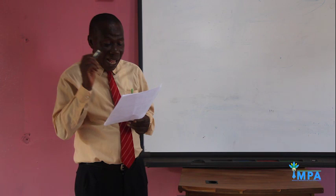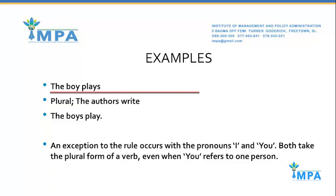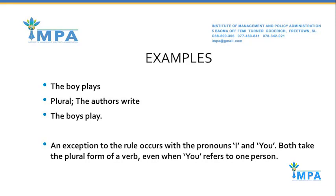With most regular verbs, singular verbs add S. For example, 'the author writes' — author is a singular subject, writes is a singular verb. 'The boy plays' — boy is a singular subject, plays is a singular verb. In other words, the plural for author should be 'authors' and the verb should be 'write.' The plural for boy should be 'boys' and the verb should be 'play.' So: the authors write; the boys play.